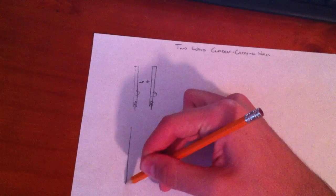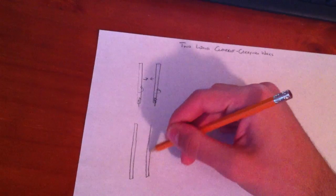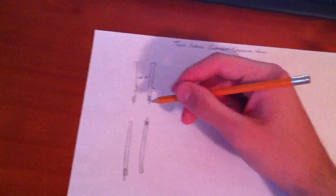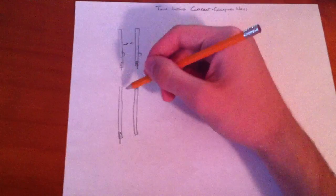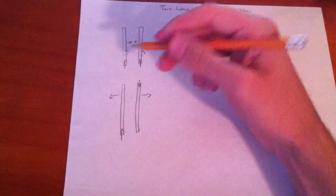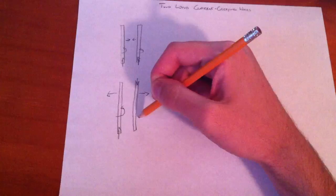If you have two wires like this parallel, one current goes up, the other current goes down, then the forces repel. One field goes like that, the other field goes like that.